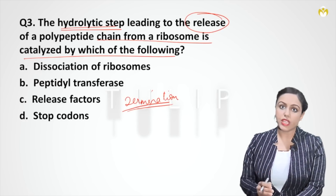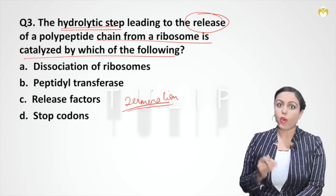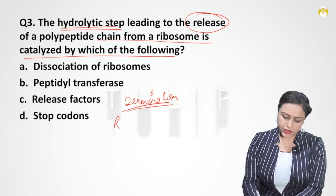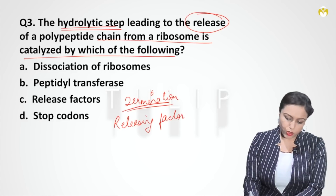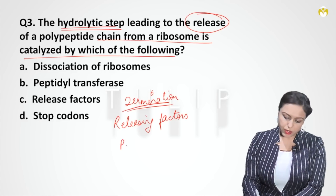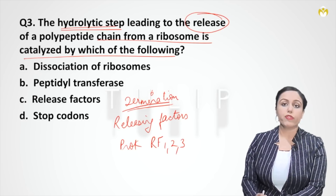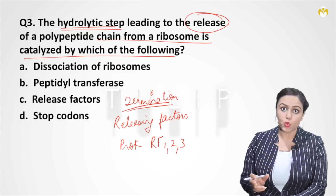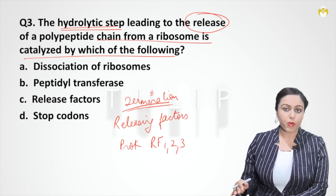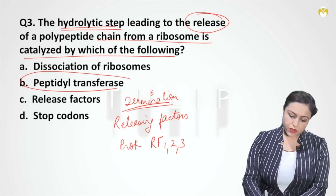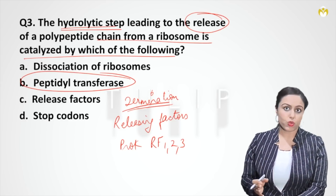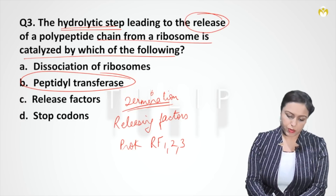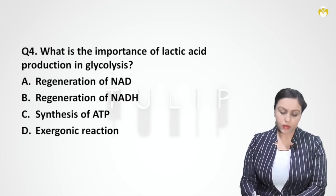In termination, the polypeptide is released from the P site — this is a frequently asked question. Releasing factors are present: in eukaryotes there is a single releasing factor, while in prokaryotes we have RF1, RF2, and RF3. However, the word 'releasing' is a misnomer — releasing factors do not actually release the polypeptide. It is the peptidyl transferase ribozyme, which also has a role in elongation, that helps in releasing the polypeptide in termination. So the answer is B.